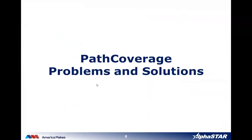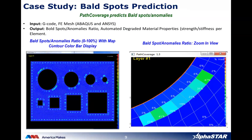The first case study is bald spot prediction using path coverage. The input is only G-code and FE mesh from Abaqus or ANSYS; the output is bald spot ratio and automated degraded material properties — strength and stiffness — per element. The color-coded map ranges from 0 to 100% bald spot ratio, identifying critical and problematic regions. Zooming into the part shows specific percentages: 41%, 26%, 19%, and so on, clearly highlighting the problematic regions using the path coverage tool.